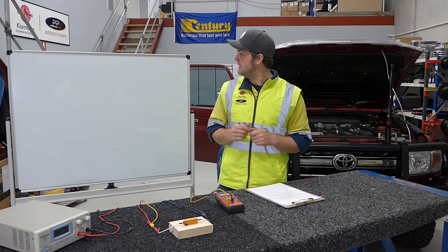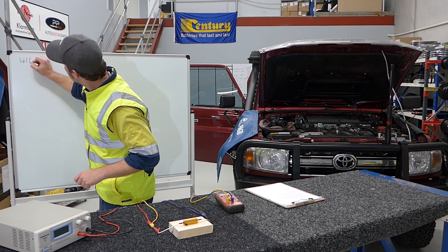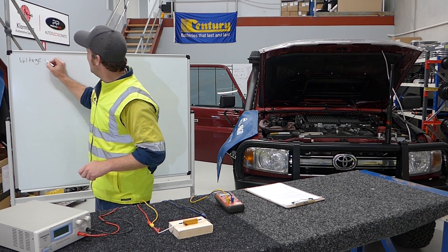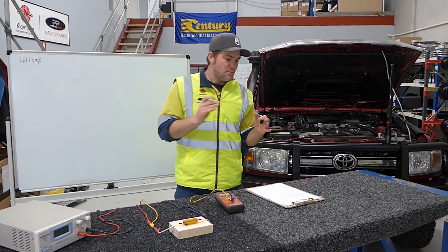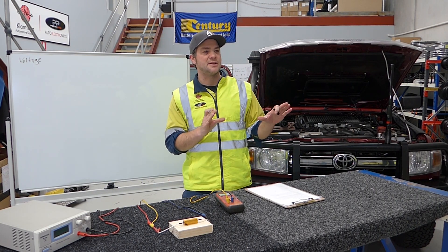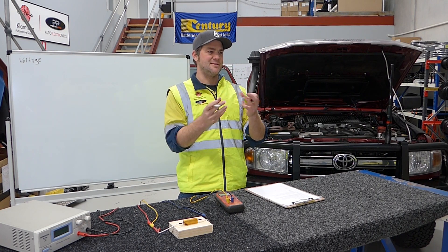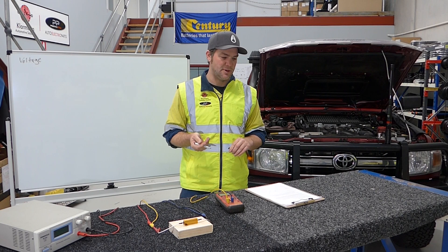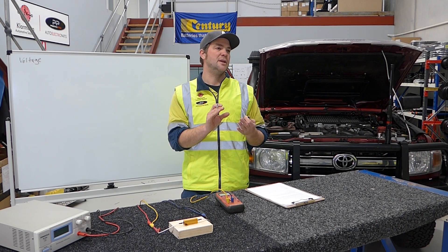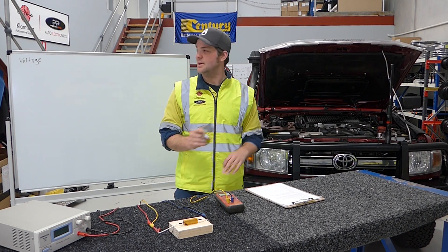The first one is voltage. Voltage we can compare to water pressure. It's quite easy to understand how electricity works by thinking about it as being water, because it's a lot easier for people to grasp. Voltage is equal to water pressure in a hose — until you let it go it's just pressure, it's not doing anything.